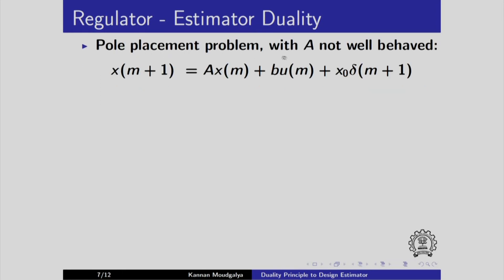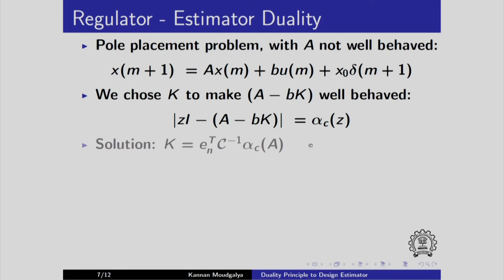Let us look at the pole placement problem with A not well behaved. We chose k to make A minus Bk better behaved. We equated these two polynomials. Alpha c of z is the desired polynomial. Remember, we used this subscript c because this is for control law design. And we arrived at this solution using Ackermann's formula.